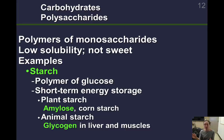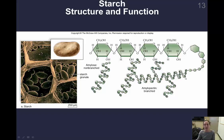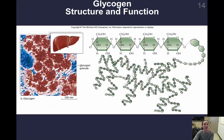Monosaccharides like glucose can easily be converted to cellular energy. Here is a picture of starch found in potatoes — amylose in potato cells. We can see the cell wall and starch granules inside that actually look like potatoes themselves. Looking at the chemical nature, we see branched amylopectin and amylose. In our liver cells, this is glycogen — the same basic structure but a slightly different branching pattern. These are all glucose molecules bonded together.